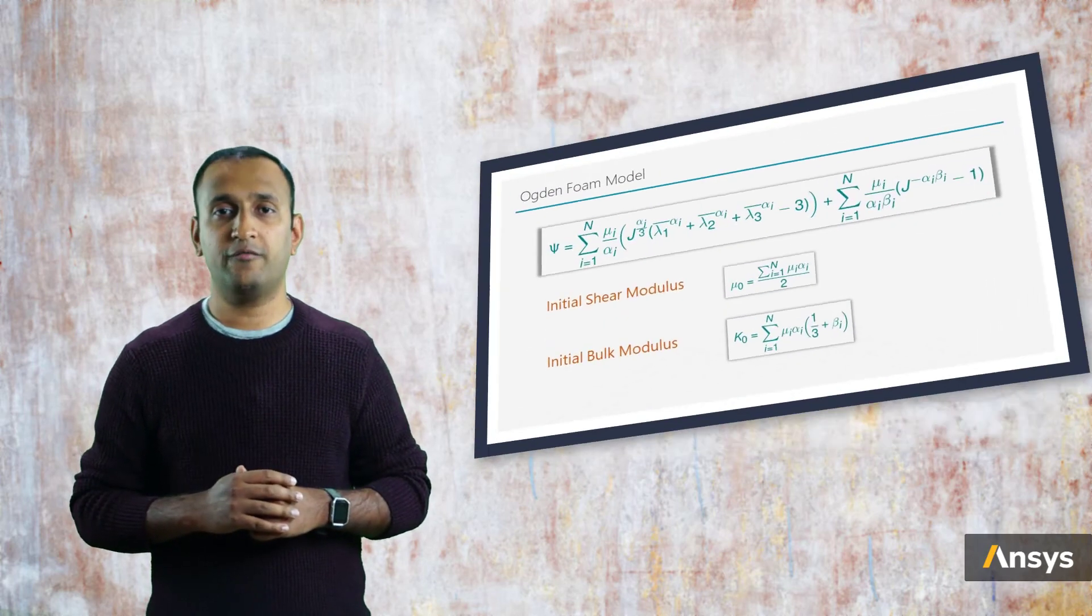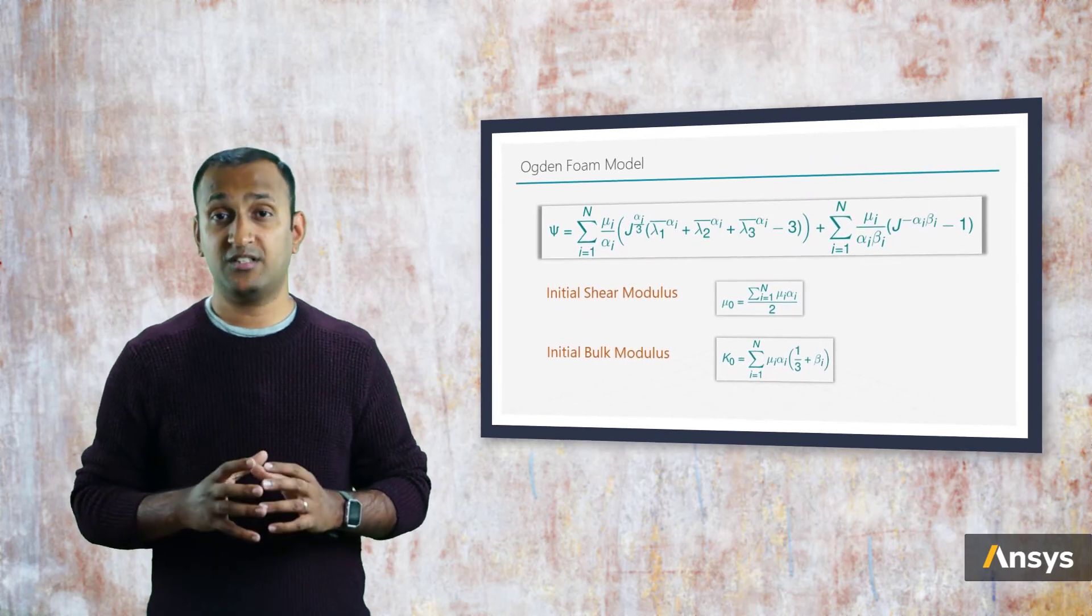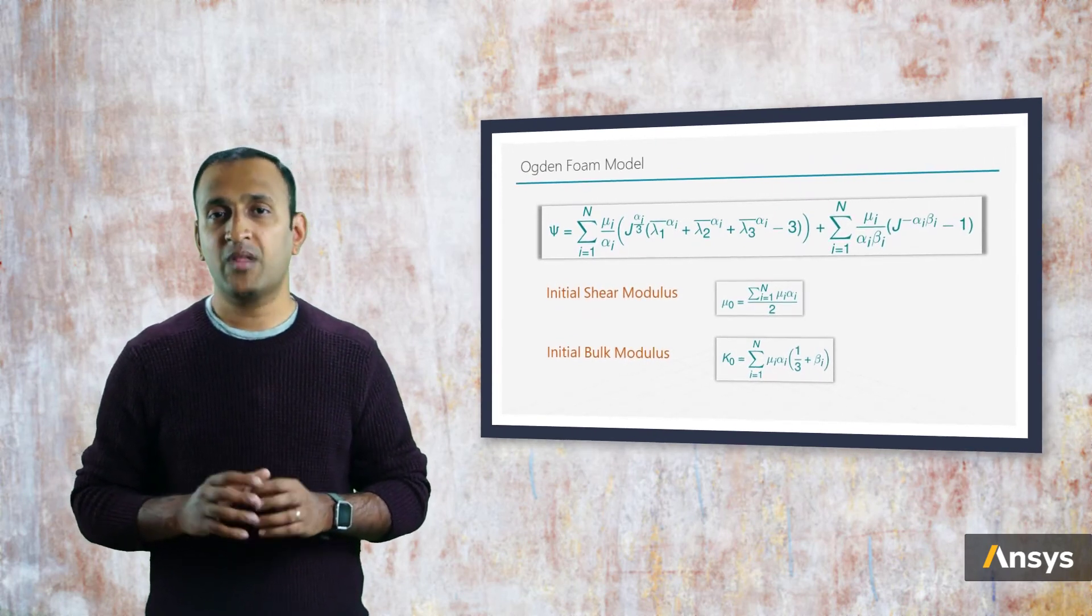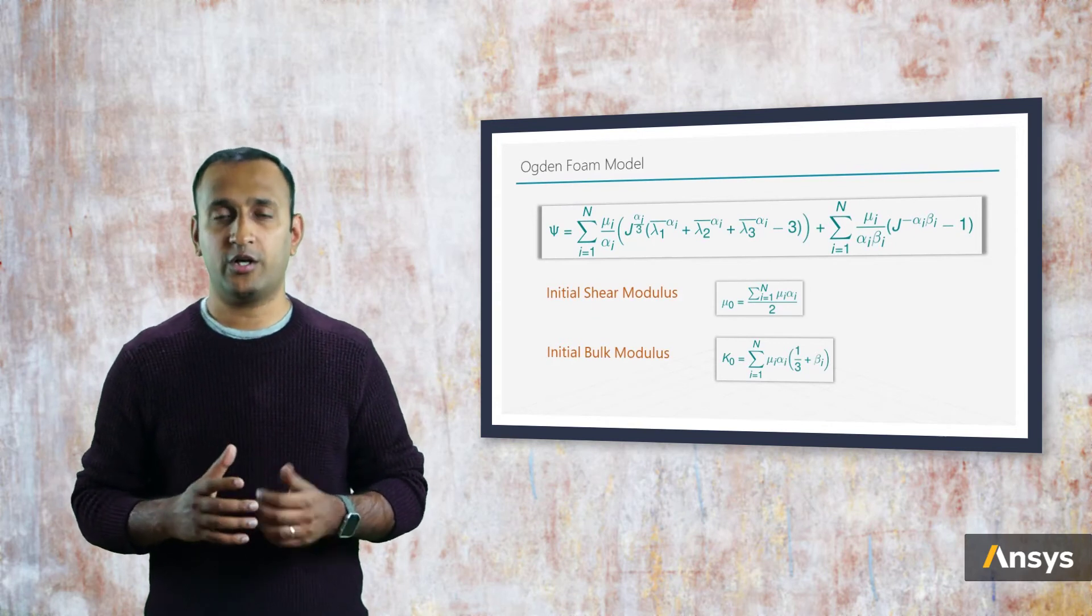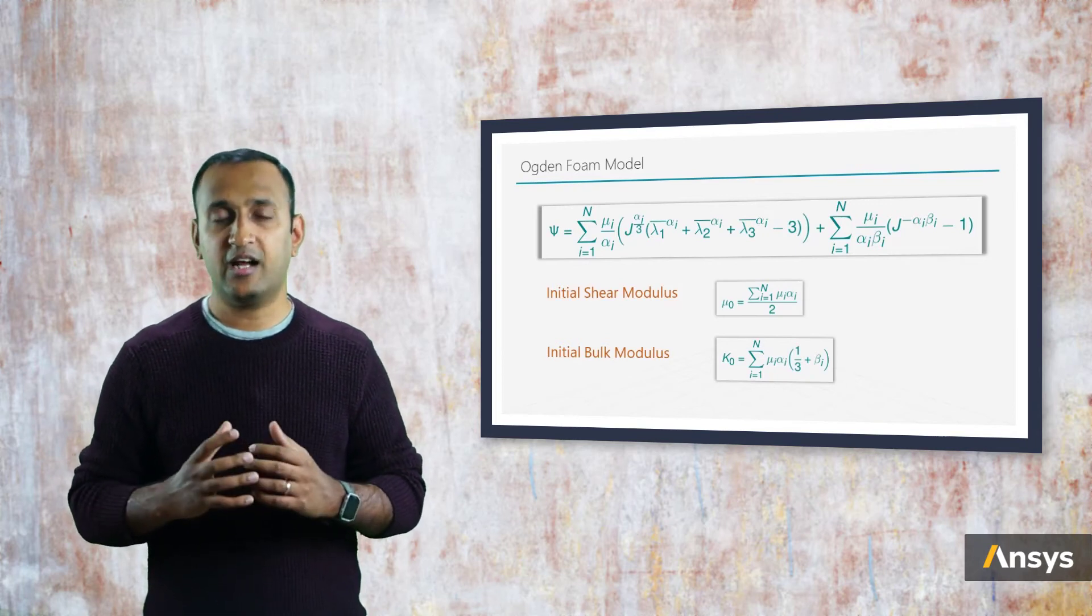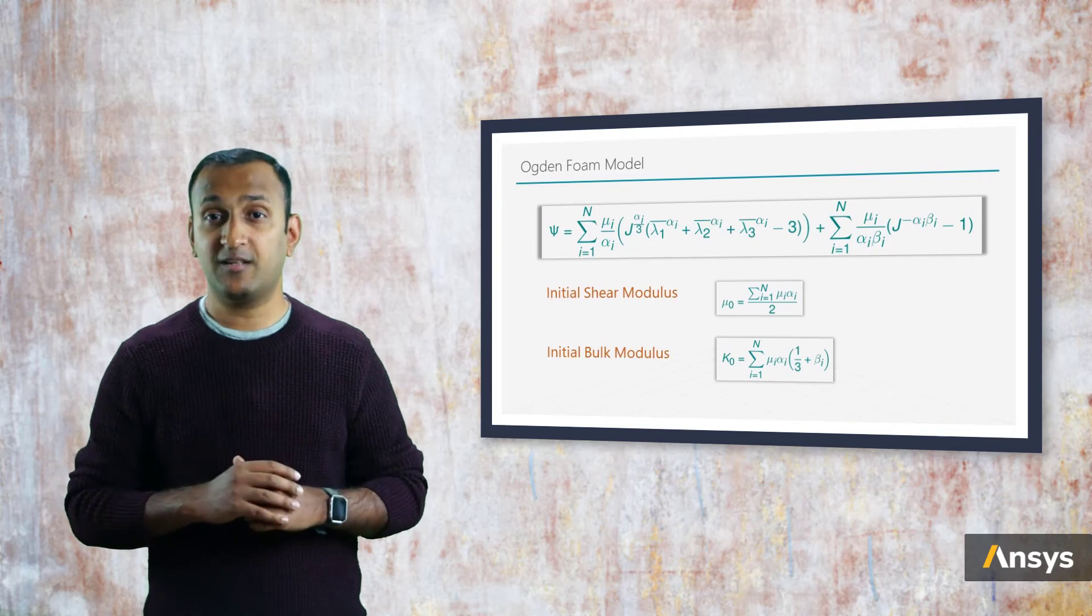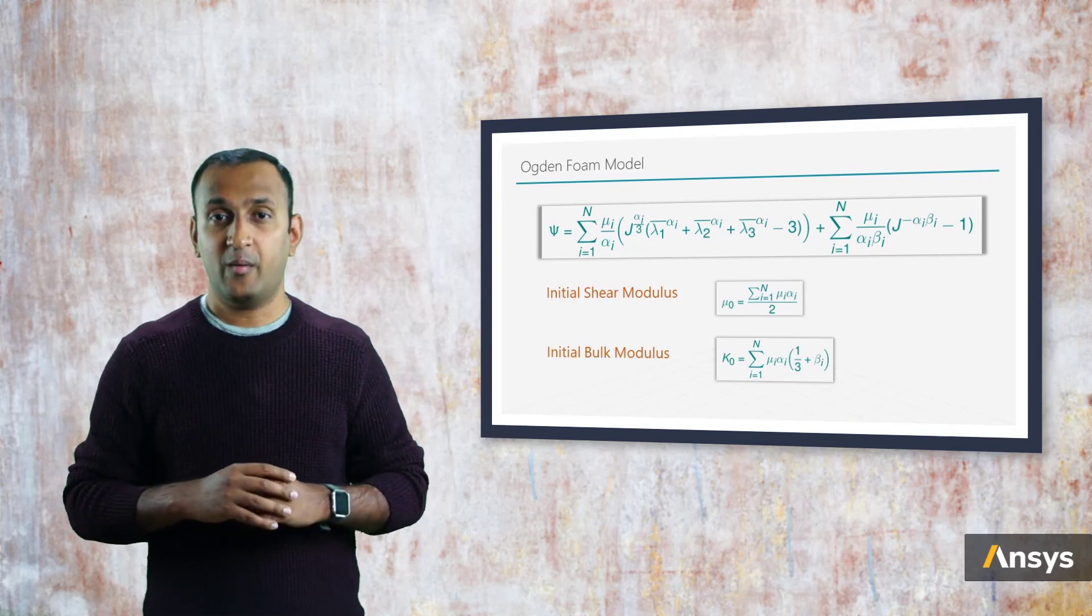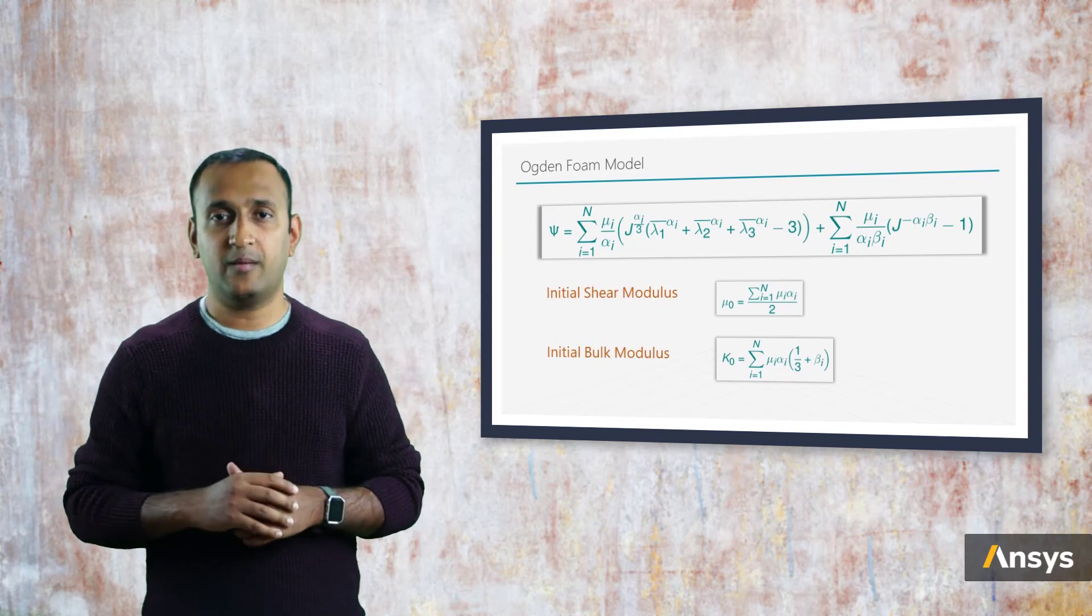Earlier I had mentioned that we will focus on fully or nearly incompressible hyperelastic materials in this section. But let's look at a hyperelastic model that is used specifically for modeling compressible foam materials, just to get an idea of the form. This is the Ogden foam model, which is used to model compressible foam materials. Its formulation looks very similar to the Ogden model, but you can notice that both the deviatoric and the volumetric terms are tightly coupled. This makes the model suitable for capturing the deformation when the volumetric deformation is not negligible compared to the deviatoric deformation.